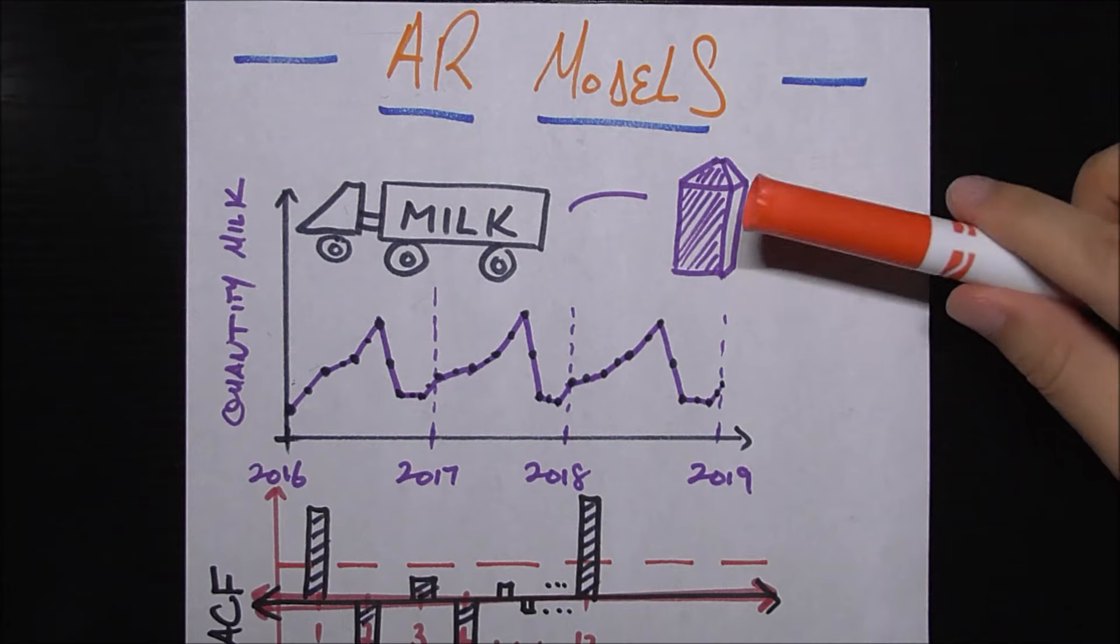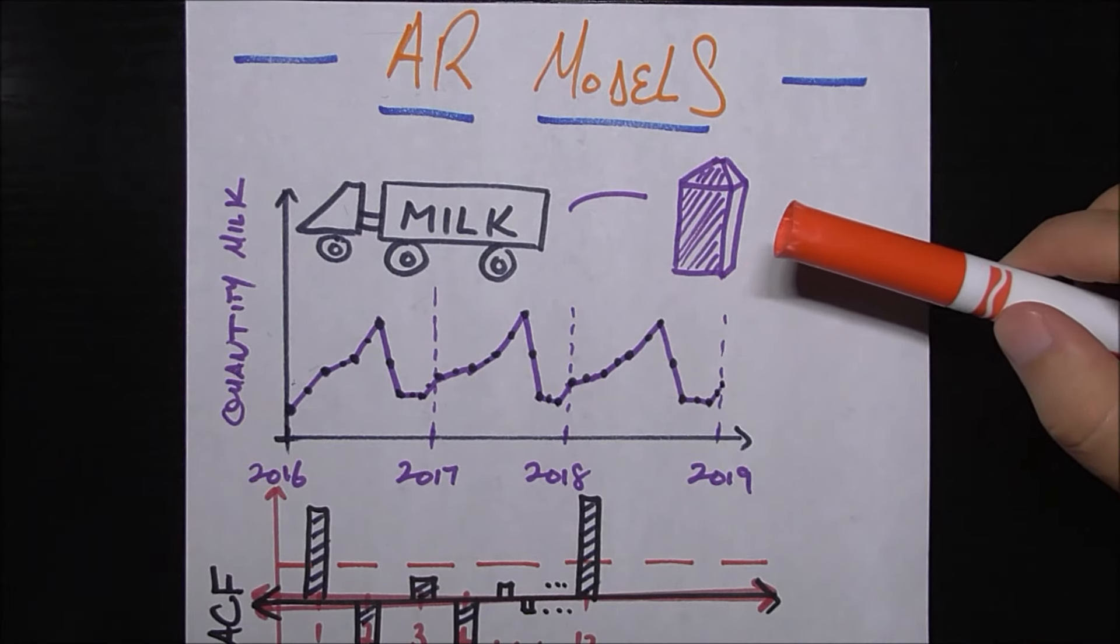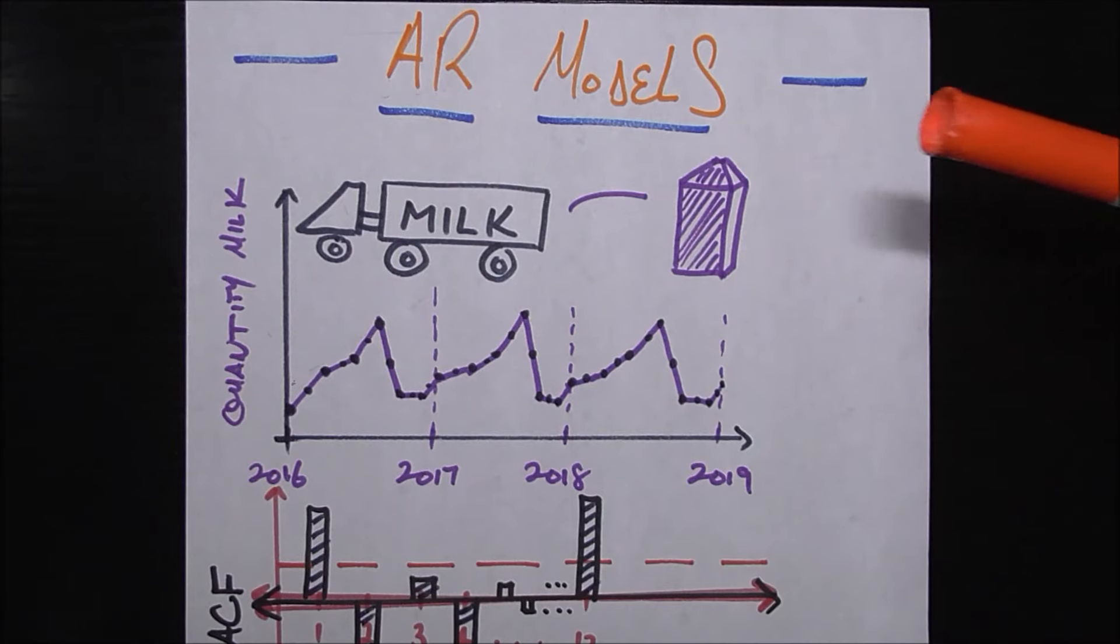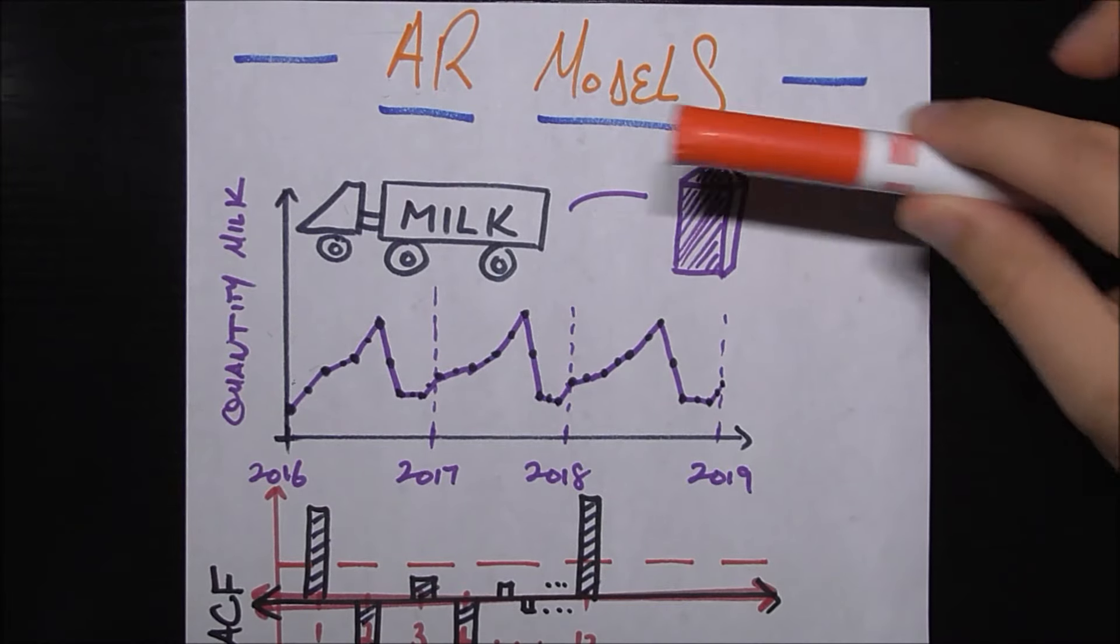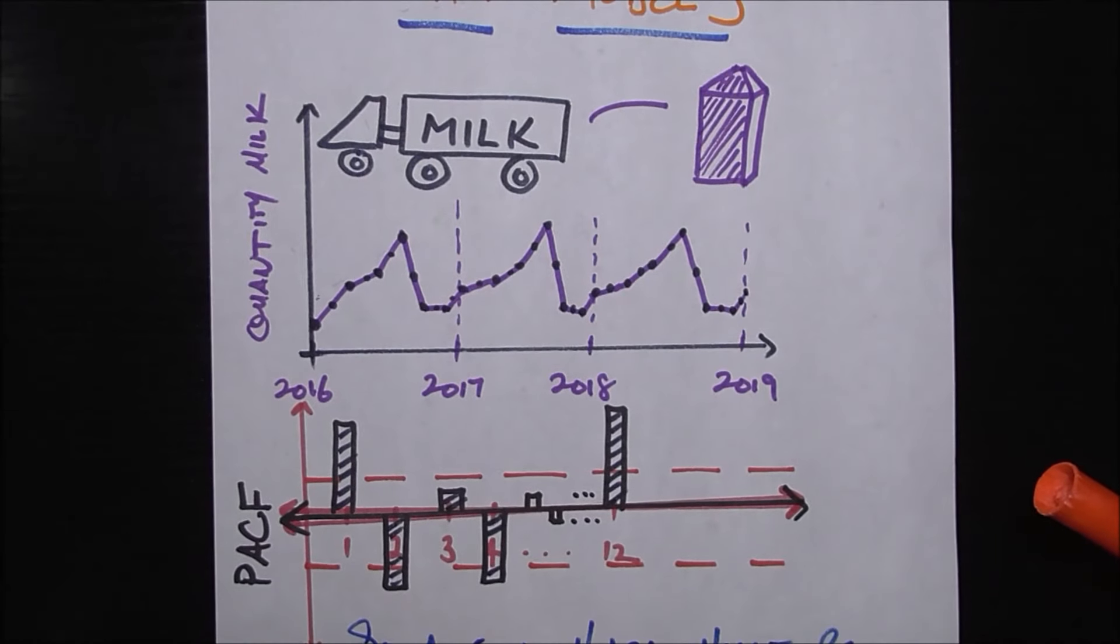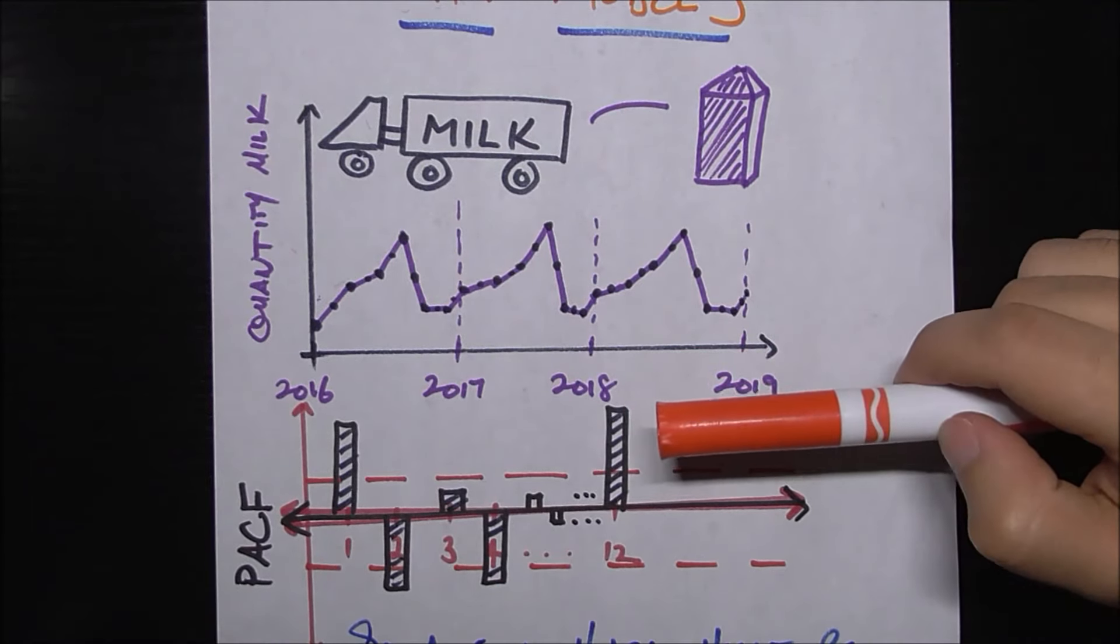You ship milk all over the country and one really big problem for you is month by month you want to know how much milk should I produce so that I can have the exact amount or pretty much the right amount to ship to everyone who needs it. I don't want to have too much because milk is going to spoil. I don't want to have too little because then I can't fulfill all my orders. So you want to know exactly how much milk should I load onto the truck this month.